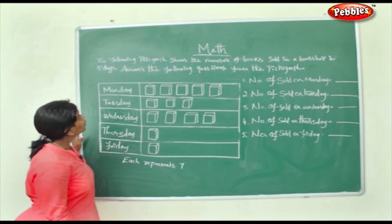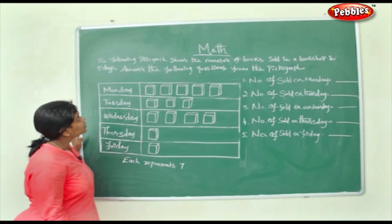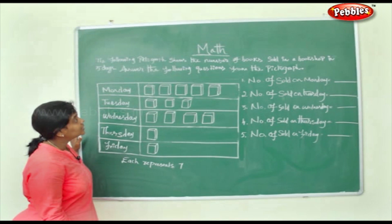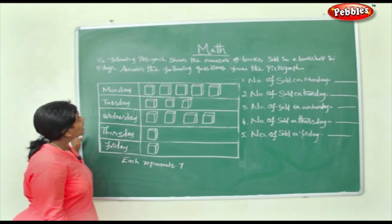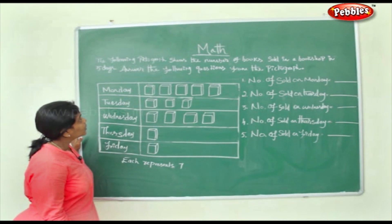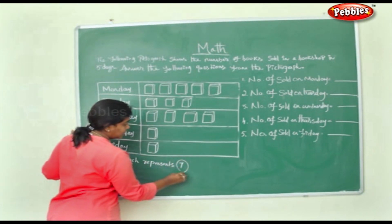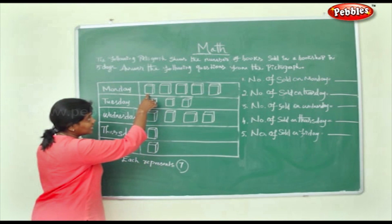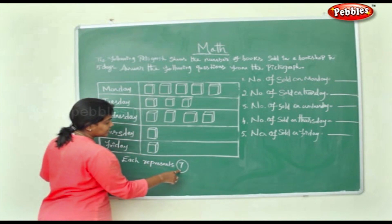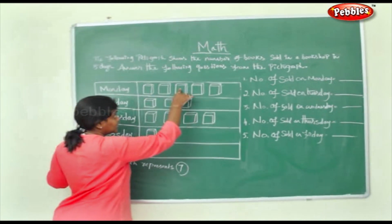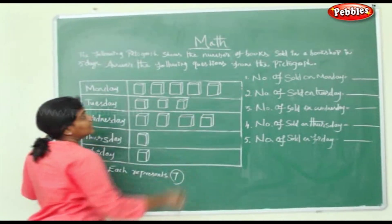Now the following pictograph shows the number of books sold in a bookshop in 5 days. Answer the following questions from looking into the picture graph. Each book represents 7. So this is 7, this is 7, this is 7, this is 7, this is 7, this is 7.